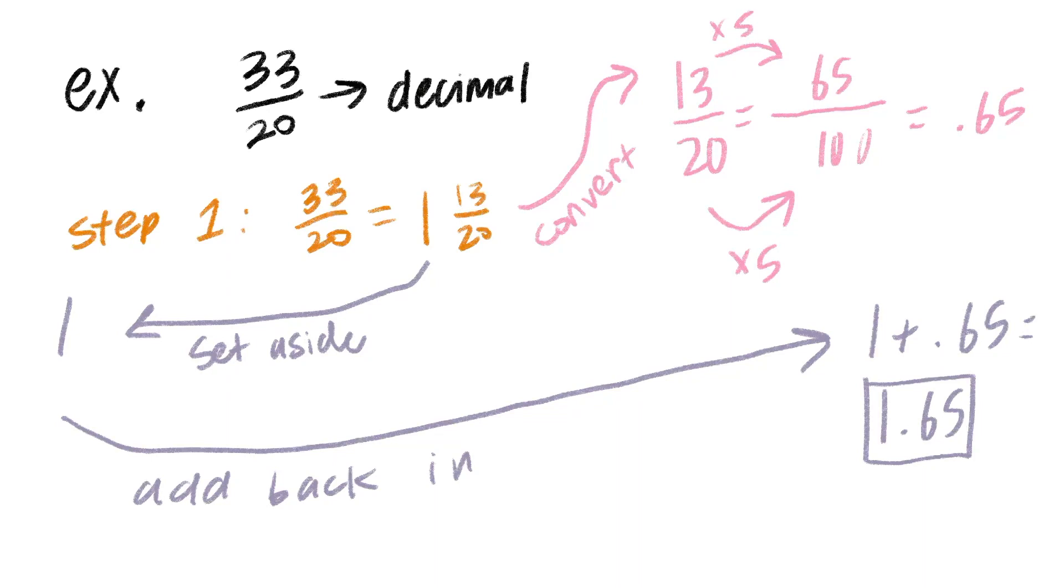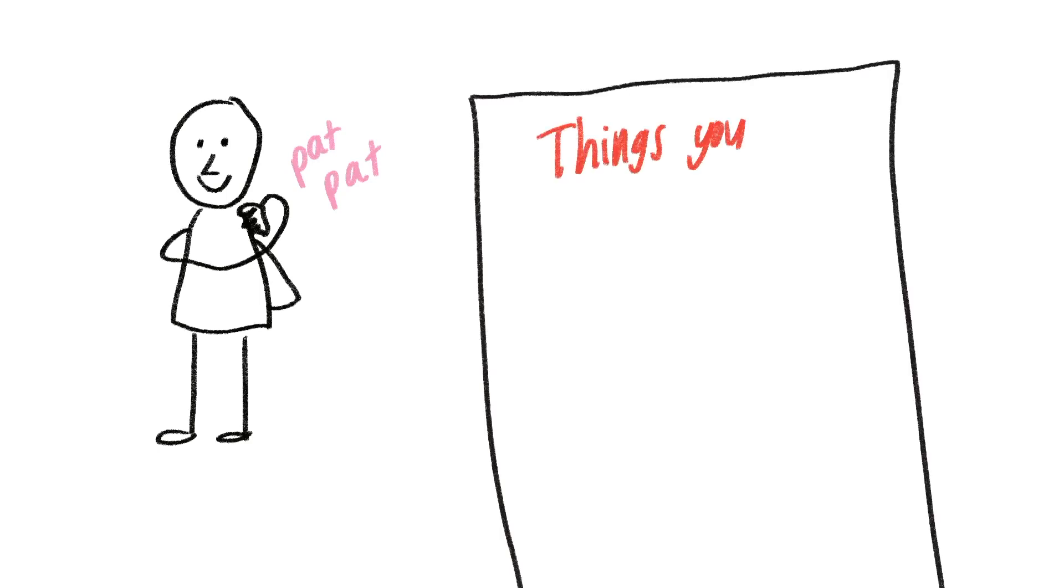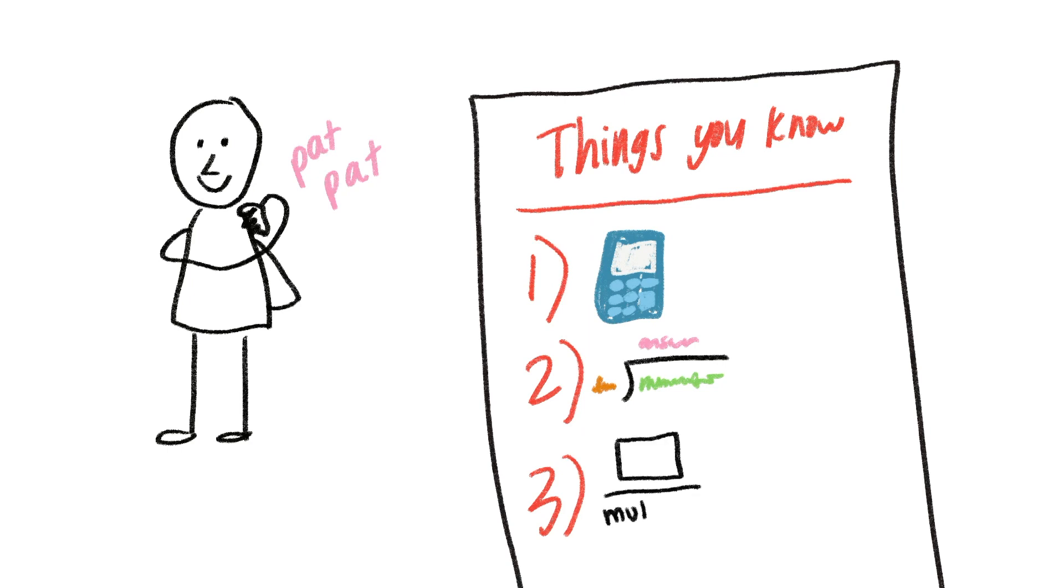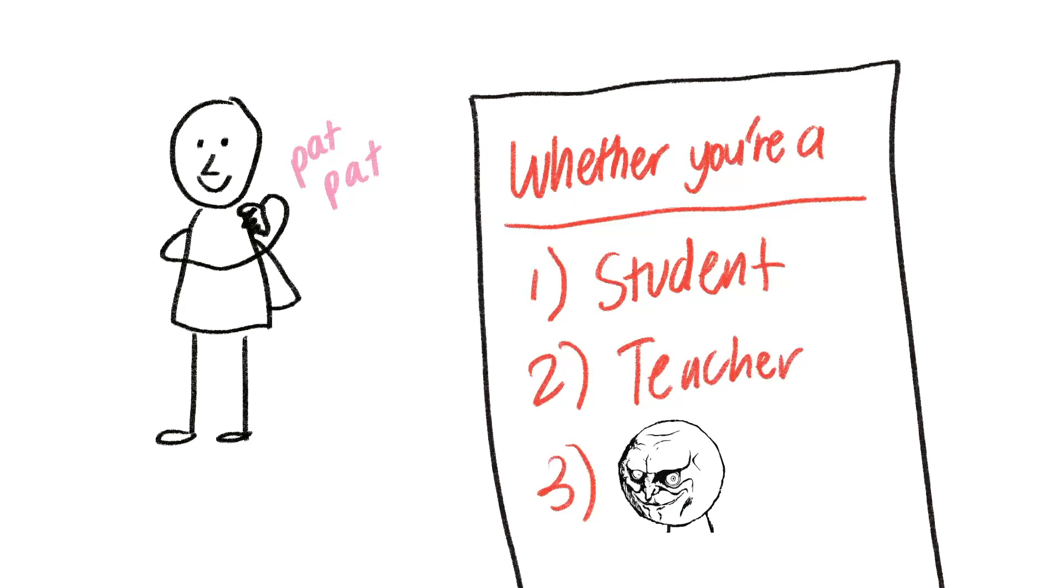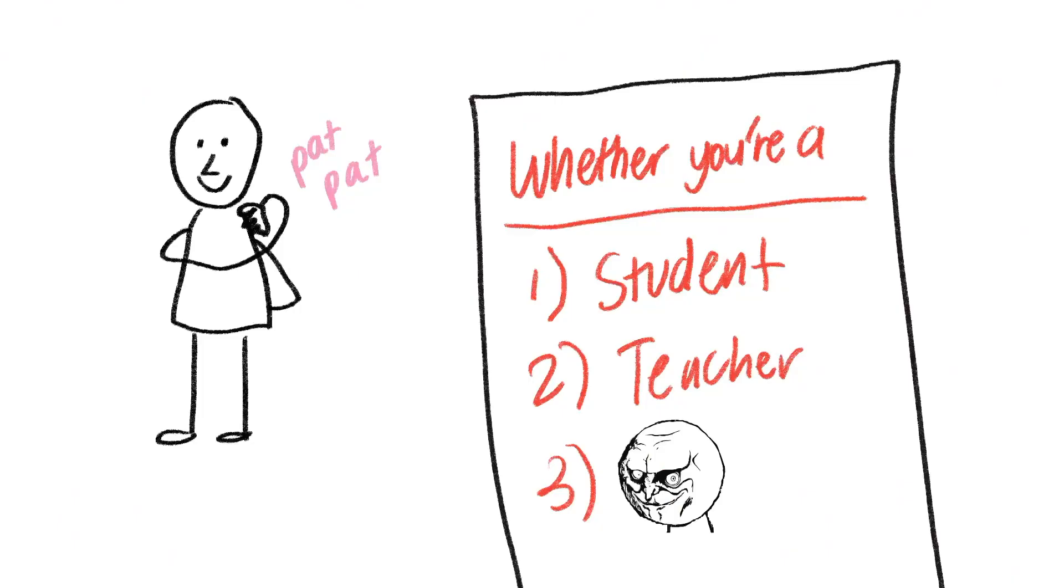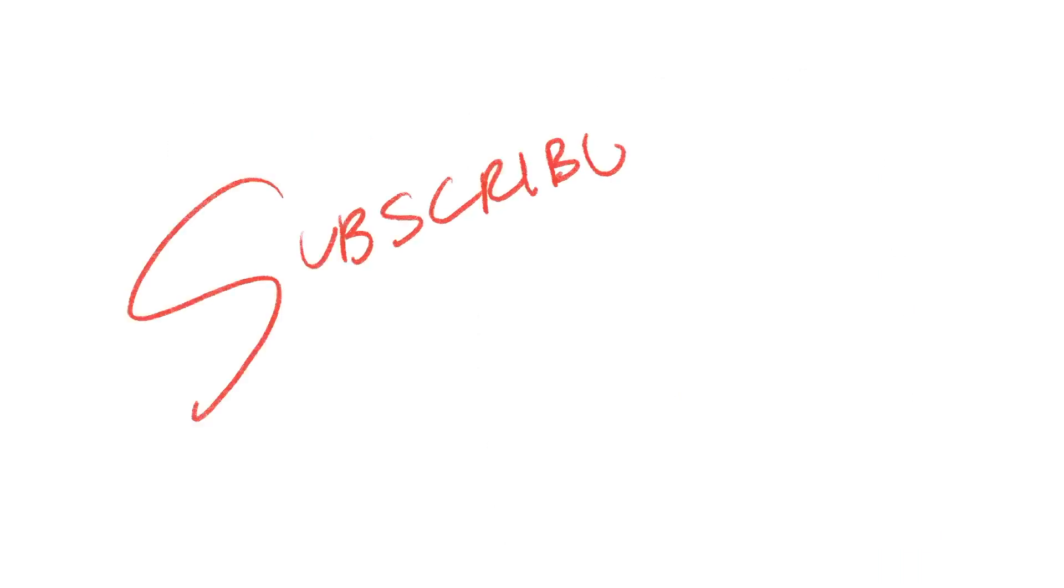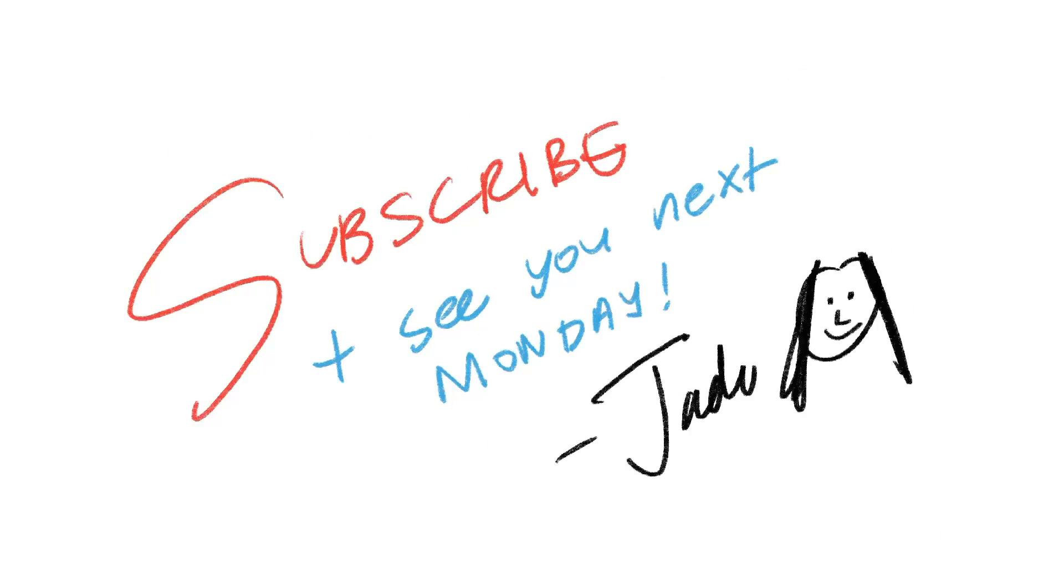Pat yourself on the back—you've just learned three ways to convert a fraction to a decimal. First, using a calculator; second, using long division; and third, getting the denominator to a power of 10. So whether you're a student struggling over classwork, a teacher that forgot how to do this concept, or someone who likes watching math videos for fun, I hope I helped you all with your fraction converting. Subscribe if this was helpful, and as always, see you next Monday. Bye!